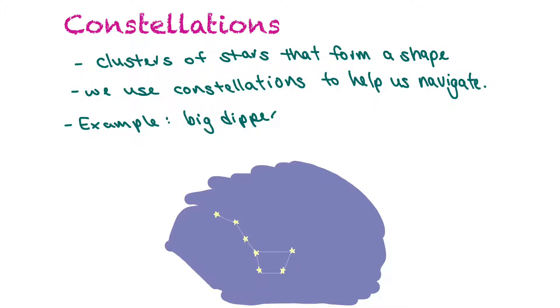Constellations are clusters of stars that form a shape, and we use constellations to help us navigate and have for thousands of years. An example of a constellation is the one that I've drawn here, the Big Dipper.